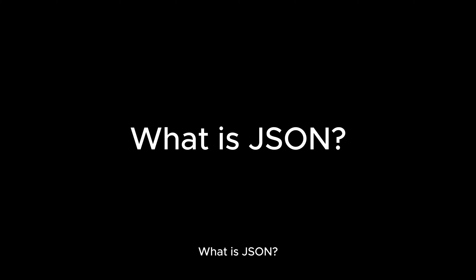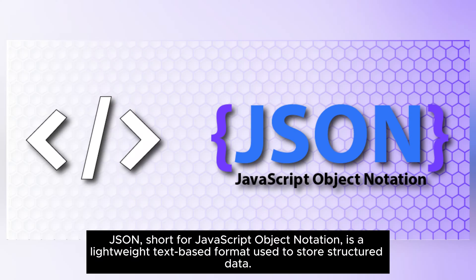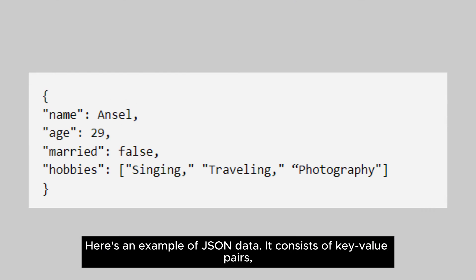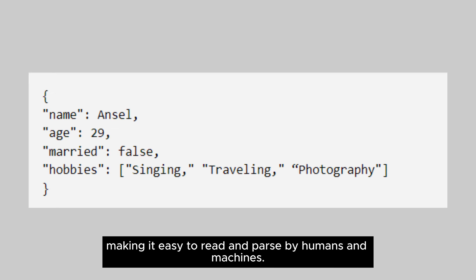What is JSON? JSON, short for JavaScript Object Notation, is a lightweight text-based format used to store structured data. Unlike its counterparts like XML or CSV, JSON offers simplicity and ease of use. Here's an example of JSON data — it consists of key-value pairs, making it easy to read and parse by humans and machines.